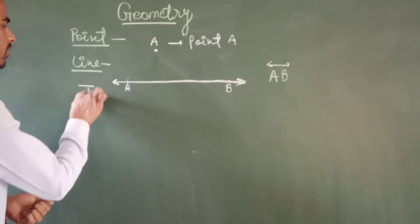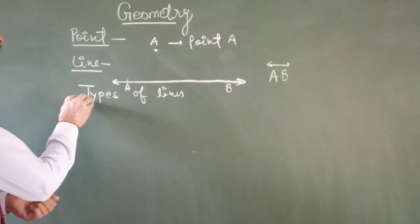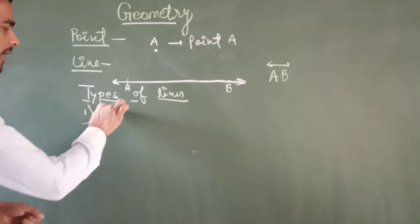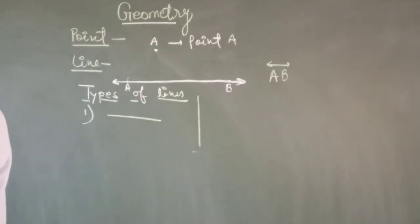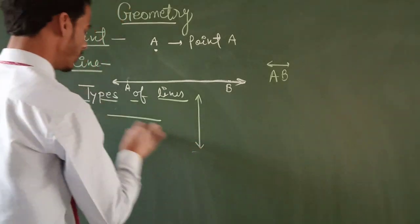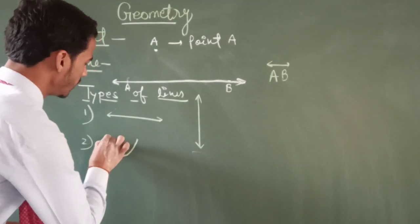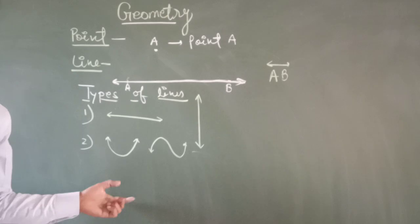Now, types of lines. A line that follows a straight path is known as a straight line. The second type is a curved line — a line that changes direction is called a curved line.